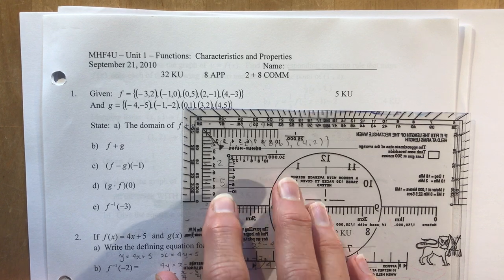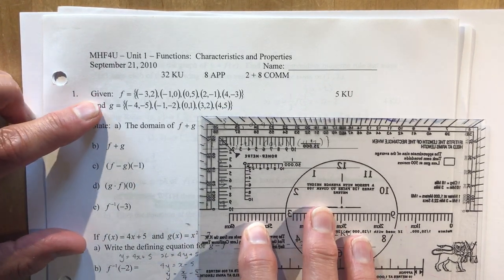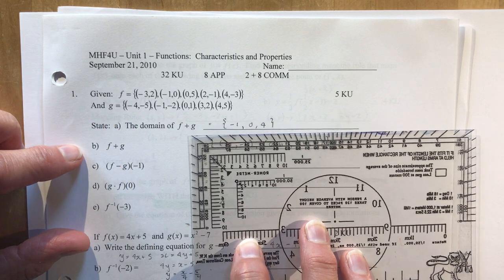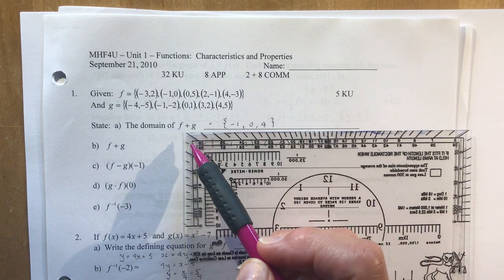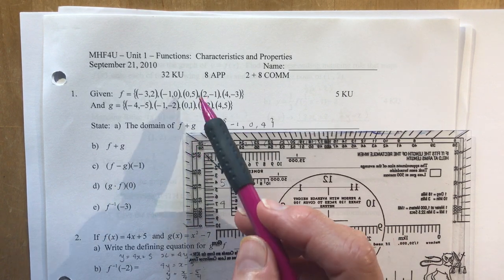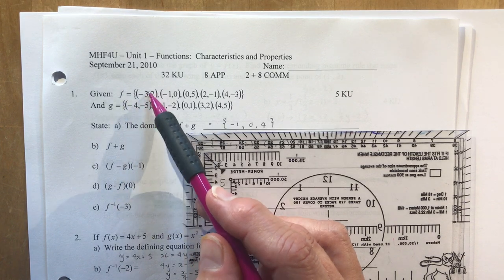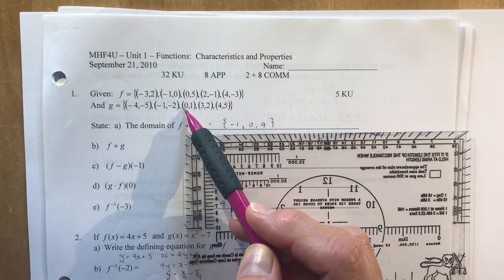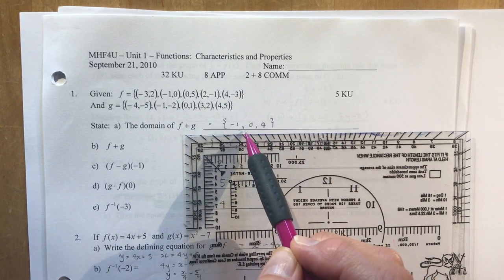Okay, so I'm just going to cover up the answers here while we move along. So first question, it said given f equals this and g equals this, state the domain of f plus g. So here's the solution here. What you're looking for again is what are the overlapping x coordinates. That's all. Just look for the ones that are the same. This one doesn't have, these ones aren't in both. We only have the minus one, the zero, and the four. So there's your domain. Very simple.